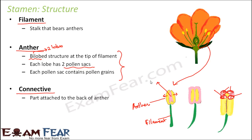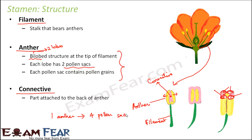The pink part you see is the connective, connecting the two lobes. So in summary: one anther has four pollen sacs. In a flower you have multiple stamens — multiple stamens together form the androecium. Each stamen has one anther, and one anther has four pollen sacs. These pollen sacs contain the pollen grains, which hold the male gametes.